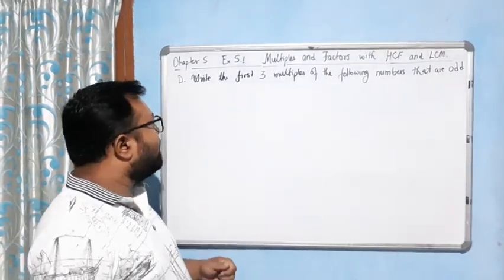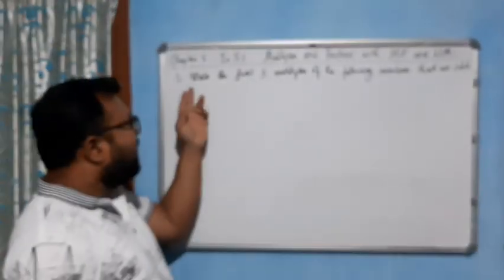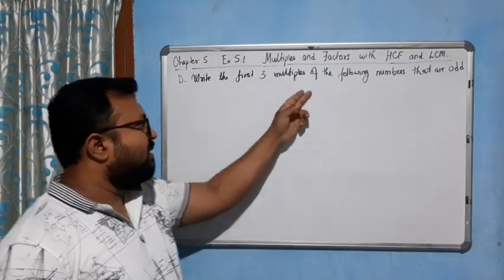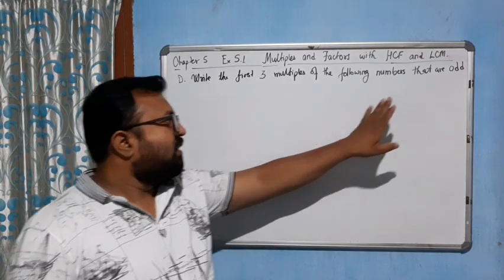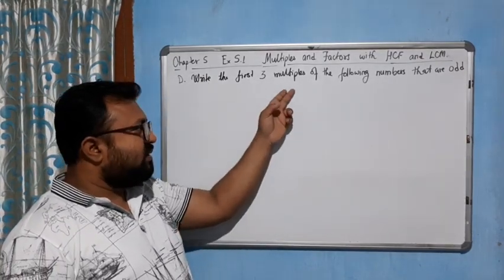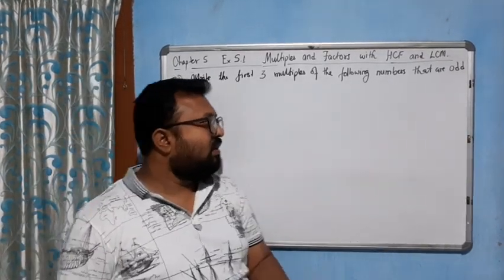Hello students, come to the next question. Write the first three multiples of the following numbers that are odd. We need to find the first three multiples whose results are odd.